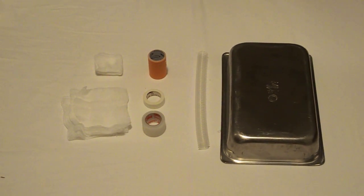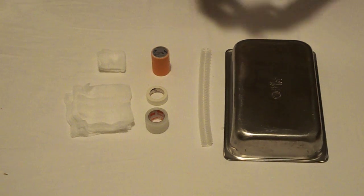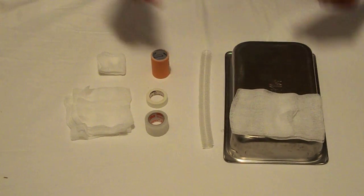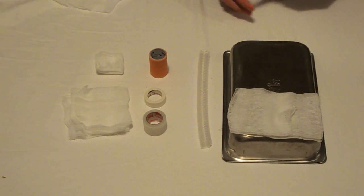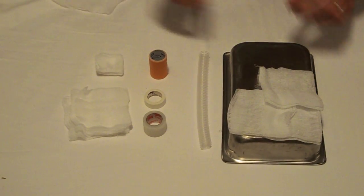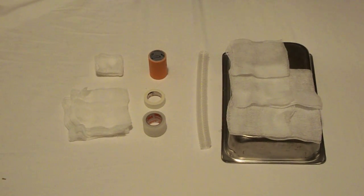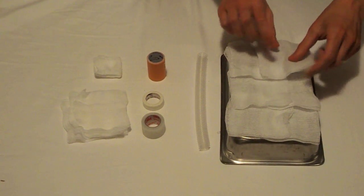So the first step is to place some of the 4x4 gauzes on the base. This is to help secure the trachea and to prevent it from rolling around. If you have a base that has a lot of friction on it or is really rough, you might not need these 4x4s at all.